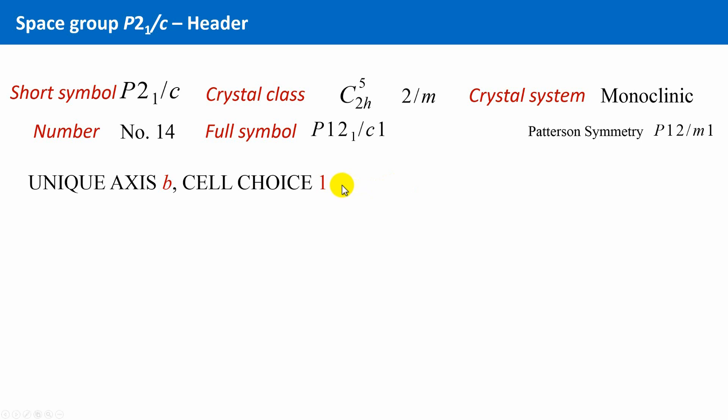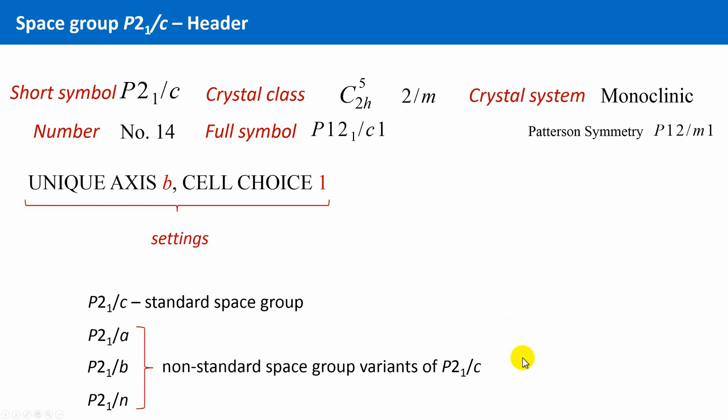First, we see here a specification of this so-called setting. This is related to the viewing directions we discussed. The space group P21 over C belongs to the monoclinic crystal system, and we know that symmetry elements can occur only in one direction, and this is said by international convention as the B direction. This is the so-called standard setting, and therefore the space group P21 over C is the standard space group. However, some researchers choose different orientations for the symmetry elements and the crystallographic axis, and this leads to the so-called non-standard space groups. For P21 over C, there are three non-standard settings.